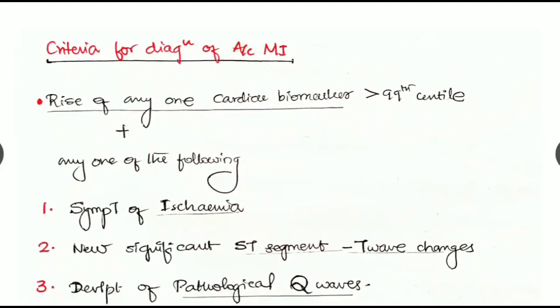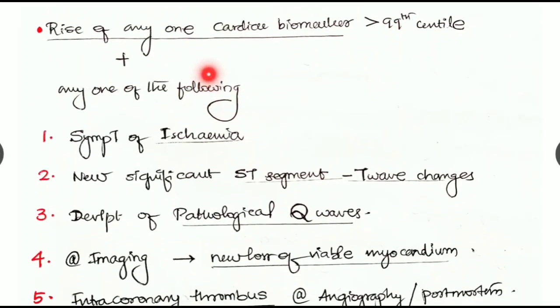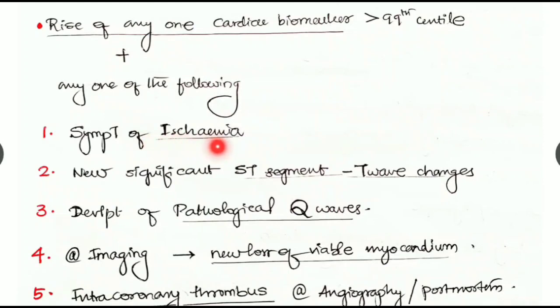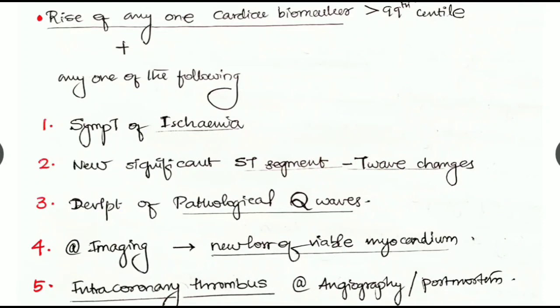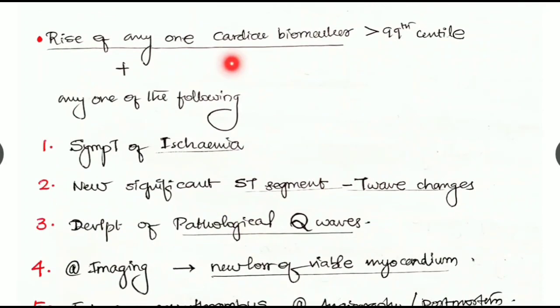Let's look at the criteria for diagnosis of acute MI. There should be a rise of any one of the cardiac biomarker more than 99th centile with any one of the following: symptoms of ischemia, new significant ST segment T wave changes, development of pathological Q waves, in imaging studies any new loss of viable myocardium, or any intracoronary thrombus in angiography or seen in post-mortem.